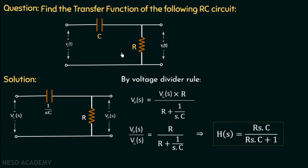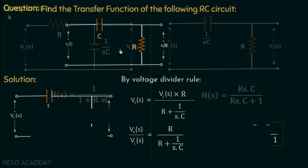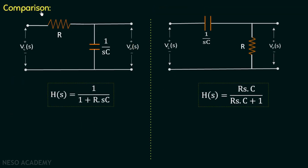We are done calculating the transfer function of this circuit. Now we compare the two RC circuits discussed in this and the previous lecture. The major difference is where the output is measured: in one circuit the output is measured across the resistor, and in the other it is measured across the capacitor. The transfer function for the resistor-output circuit is H(s) = sRC / (sRC + 1).